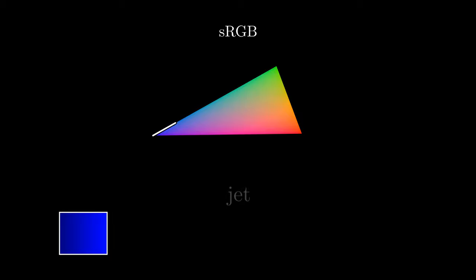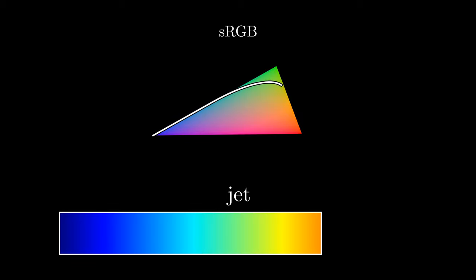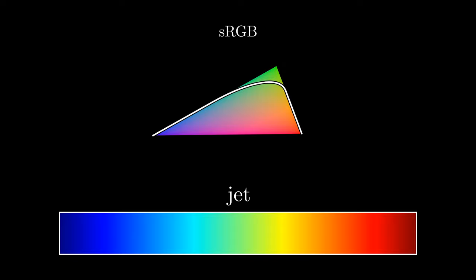Drawing a path through the sRGB space gives us a color map, but it doesn't guarantee that it will be particularly good.